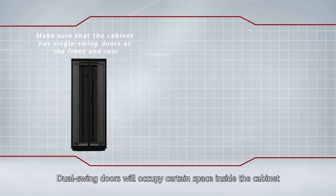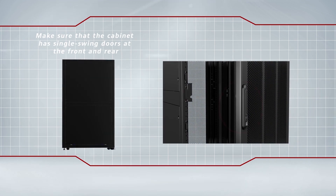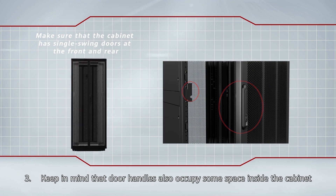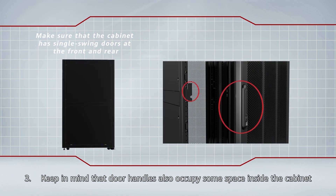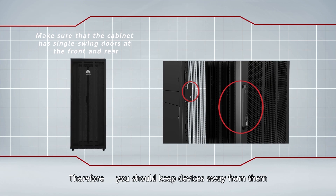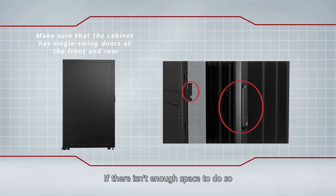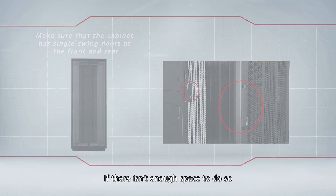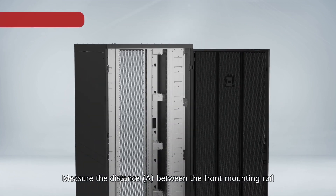Make sure the cabinet has single swing doors at the front and rear, as dual swing doors will occupy certain space inside the cabinet. Keep in mind that door handles also occupy some space inside the cabinet, so keep devices away from them when mounting. If there is not enough space, replace the cabinet.